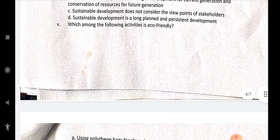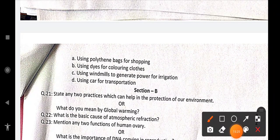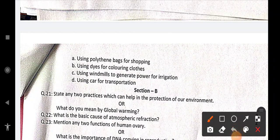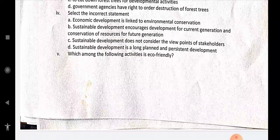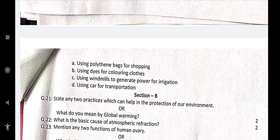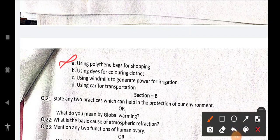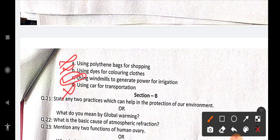Which among the following activities is eco-friendly? We have to state the one which is eco-friendly. Using polythene bags? No, it is not. Using dyes for coloring clothes? No, it's not. Using windmills to generate power for irrigation? Yes, it is. Using car for transportation? No, it is not. So option C again is the correct one.